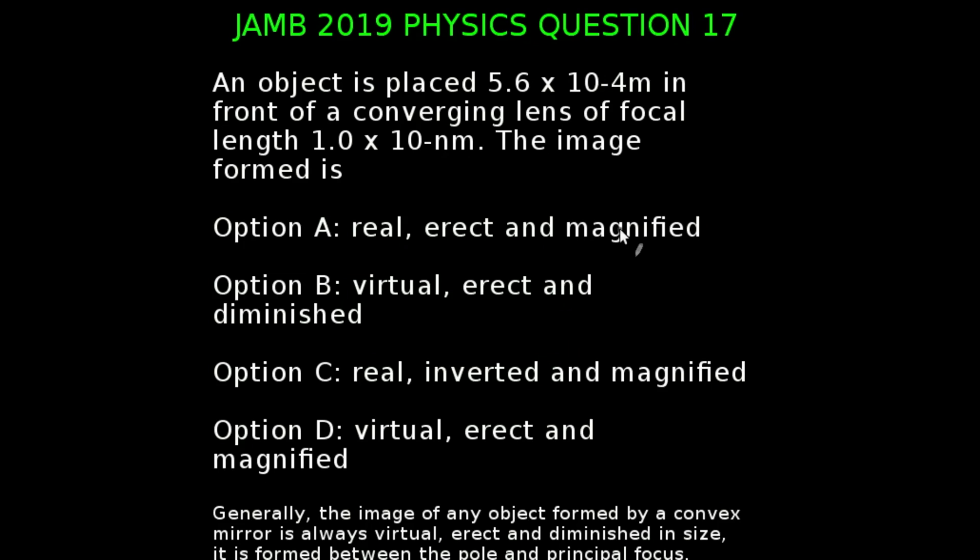You are looking at JAMB 2019 physics question number 17. An object is placed 5.6 times 10 to the power minus 4 meters in front of a converging lens of focal length 1.0 times 10 to the power minus 4 meters. The image formed is